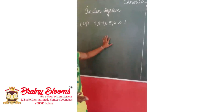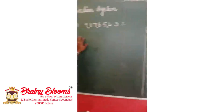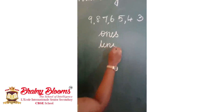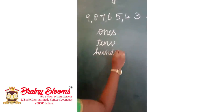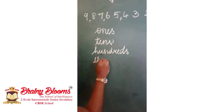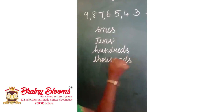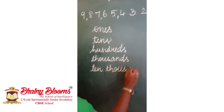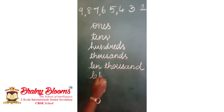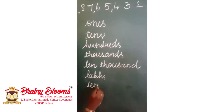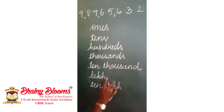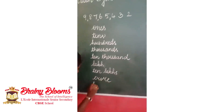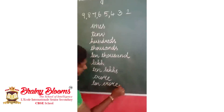In the Indian system, the place values are: ones, tens, hundreds, thousands, ten thousands, lakh, ten lakh, crore, ten crore, and it goes on.